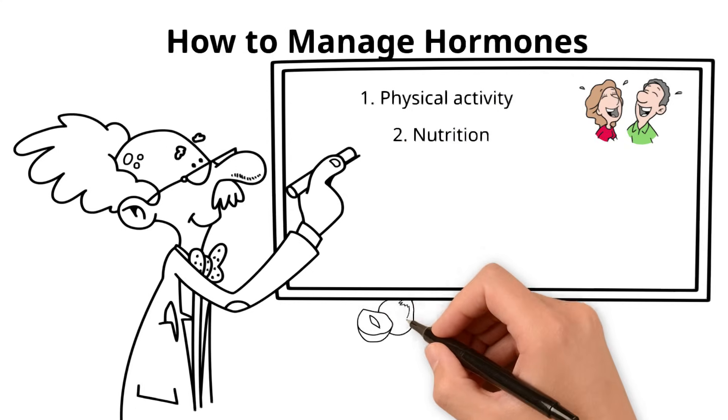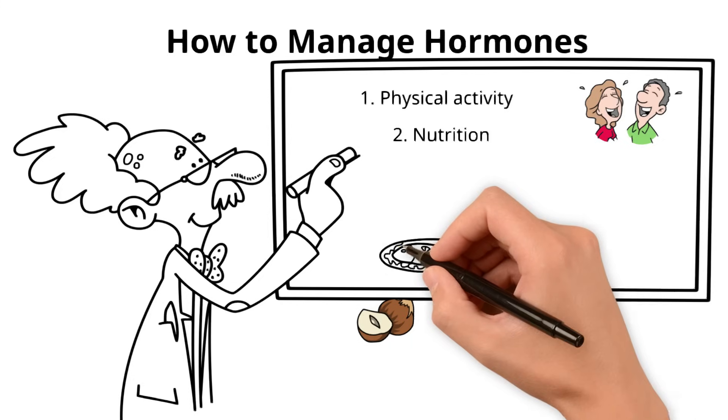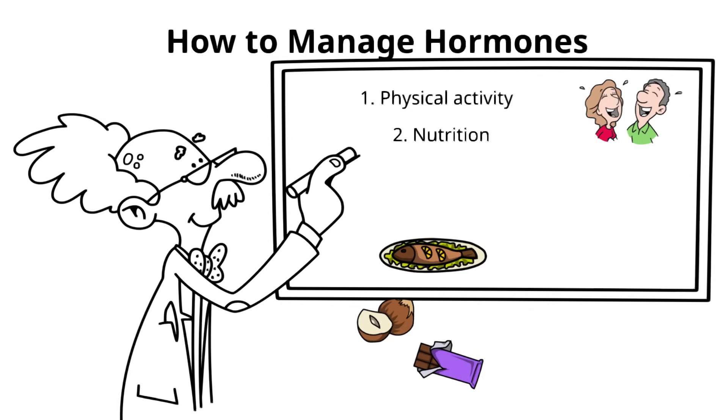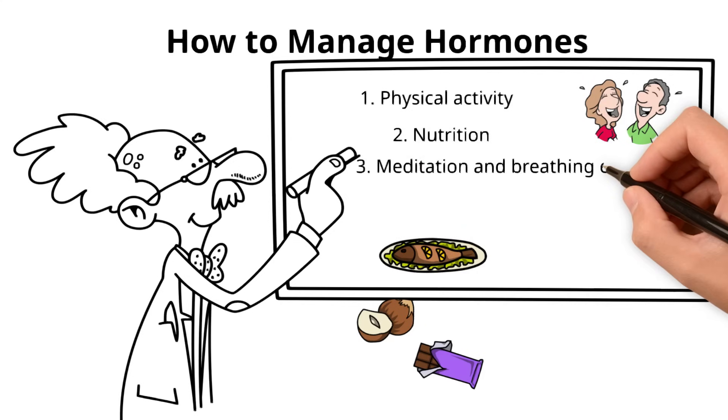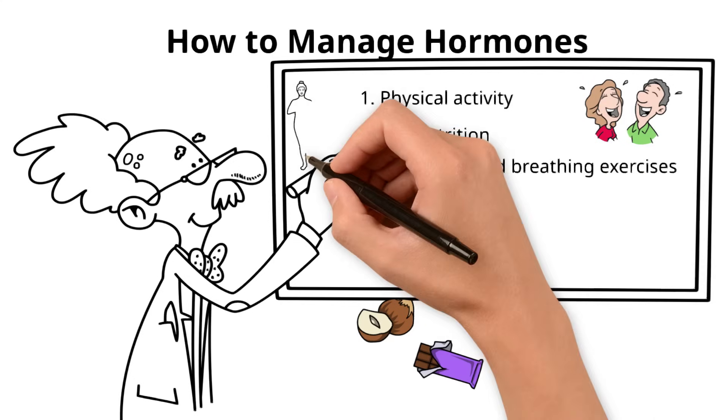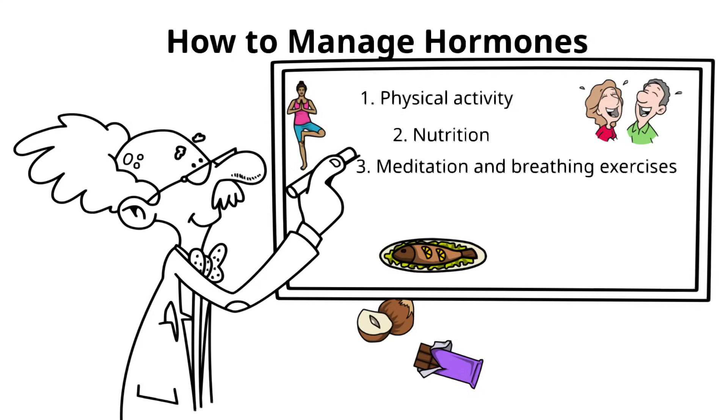2. Nutrition. Include nuts, fish, and dark chocolate in your diet to support serotonin production. 3. Meditation and breathing exercises lower cortisol levels.